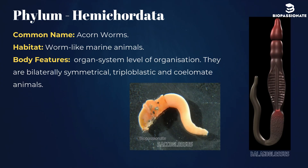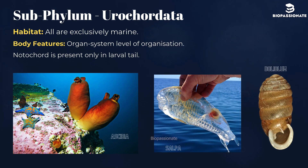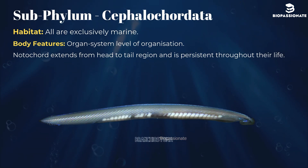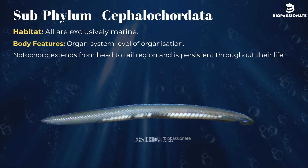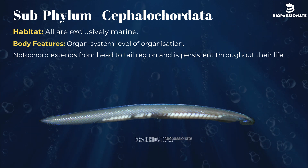Phylum Hemichordata, commonly known as acorn worms. These are worm-like marine animals with organ system level of organization. They are bilaterally symmetrical, triploblastic, and coelomate. Examples: Balanoglossus and Saccoglossus. Subphylum Urochordata: all exclusively marine; notochord present only in larval tail. Examples: Ascidia, Salpa, Doliolum. Subphylum Cephalochordata: exclusively marine; notochord extends from head to tail and is persistent throughout life. Example: Branchiostoma.